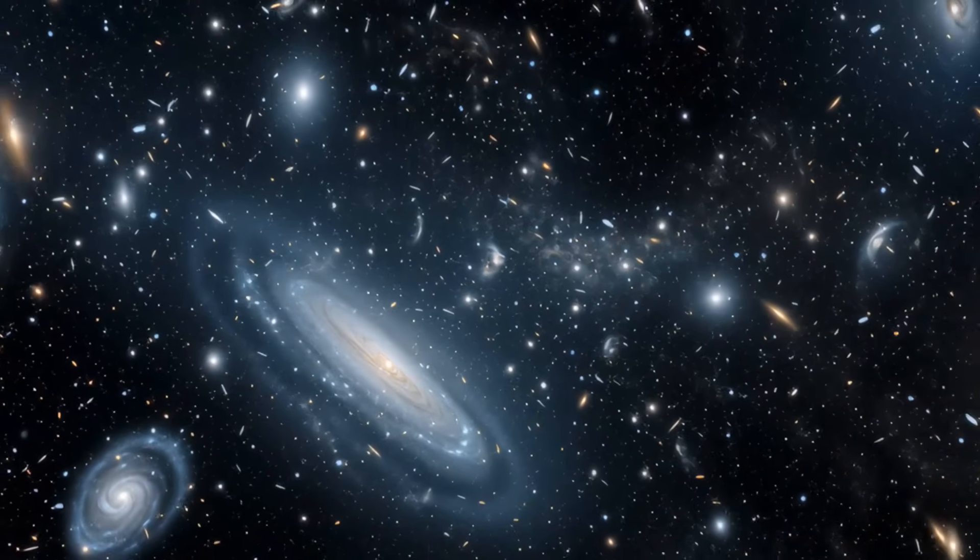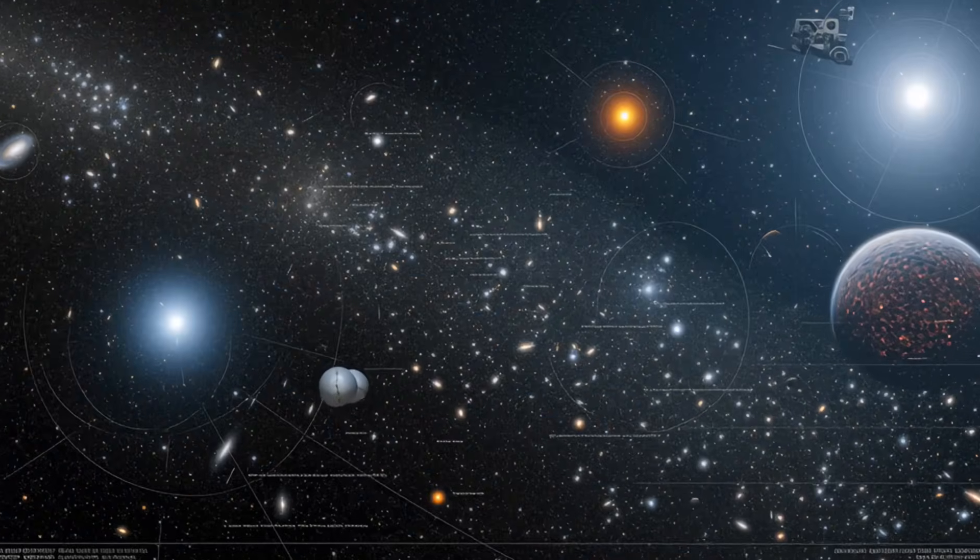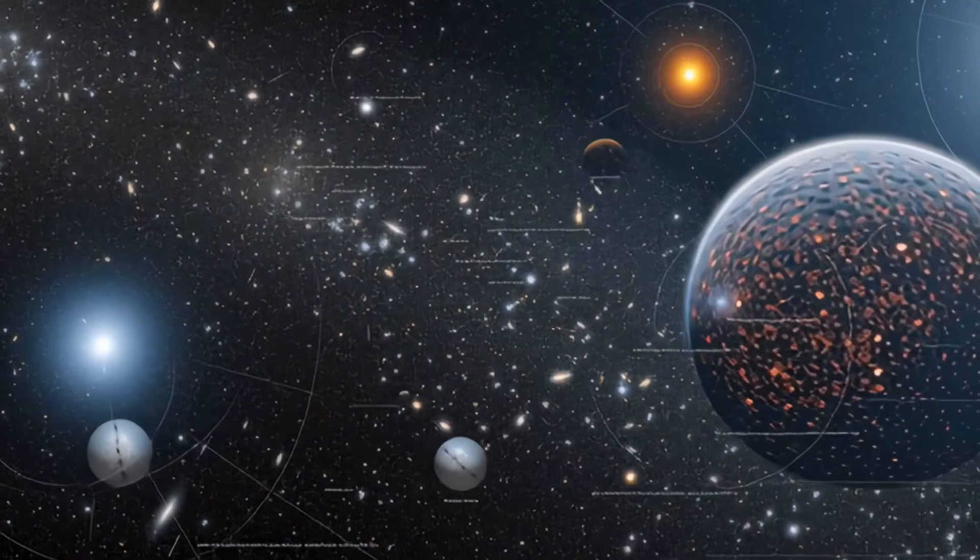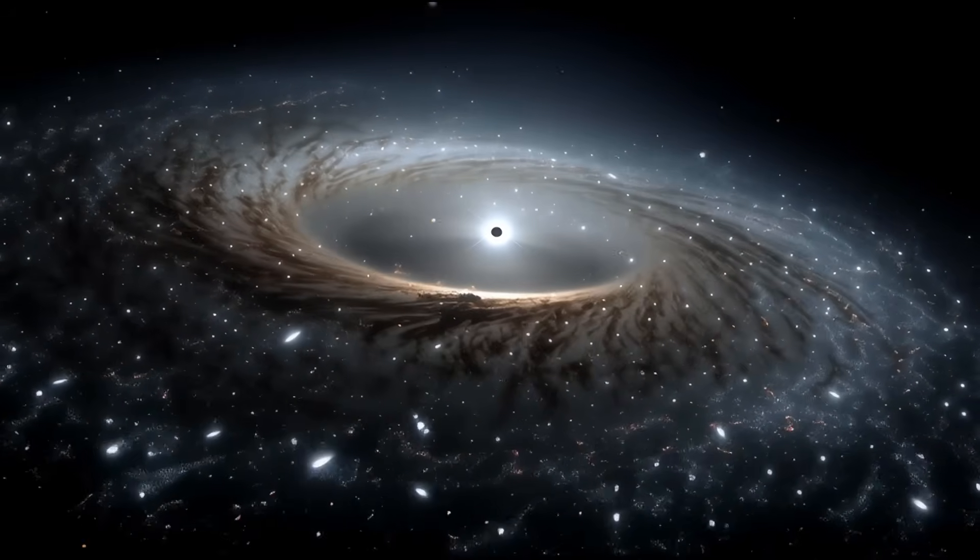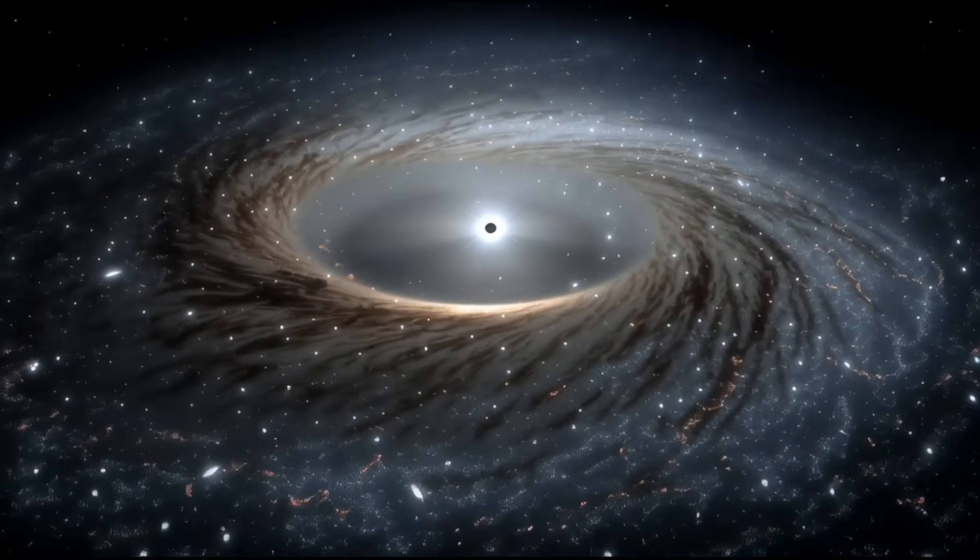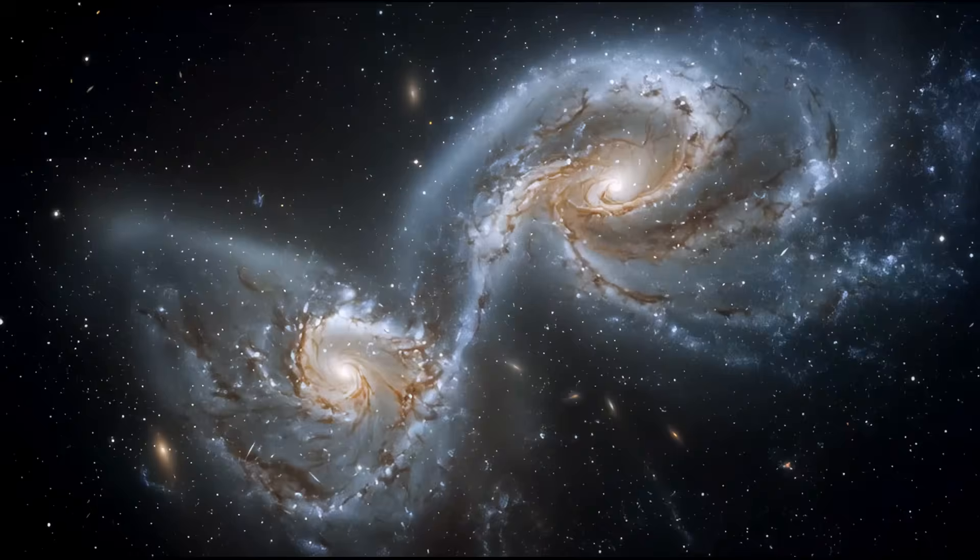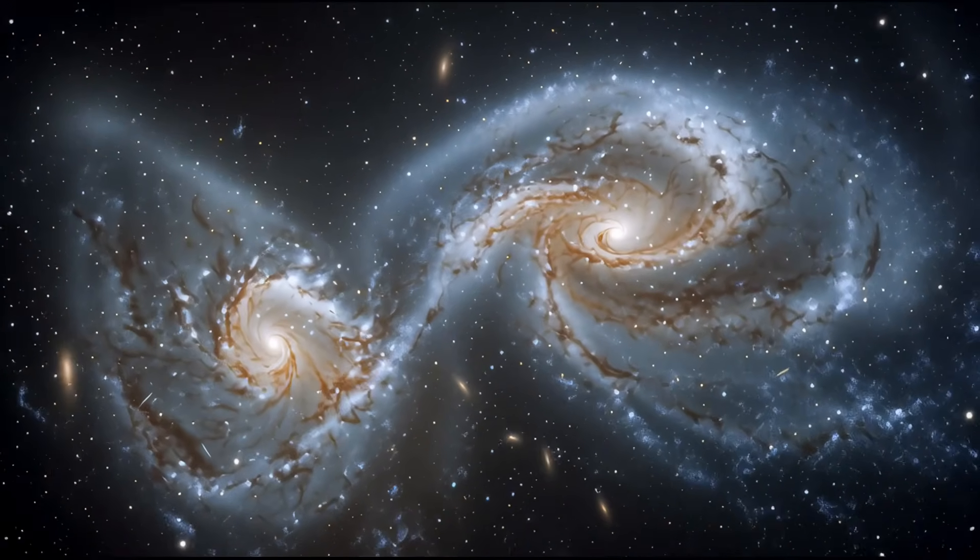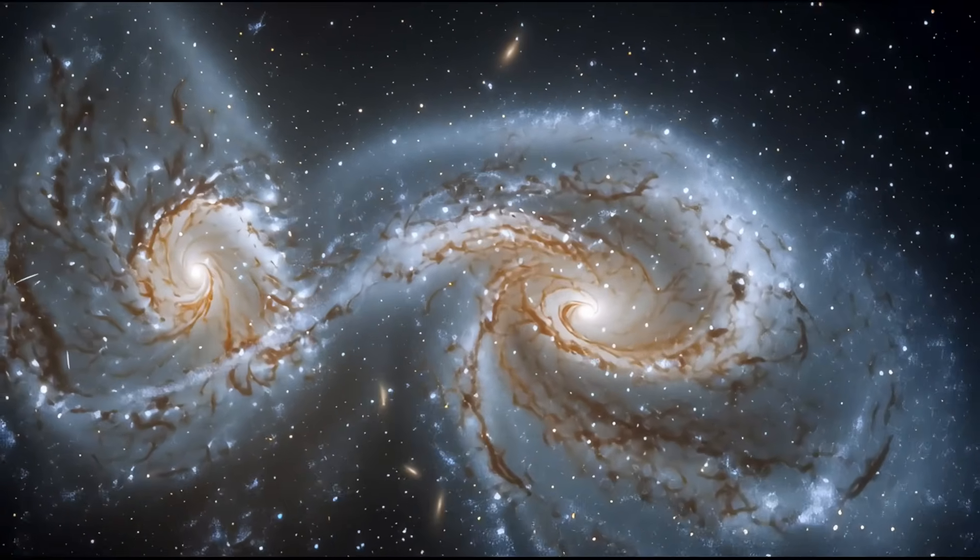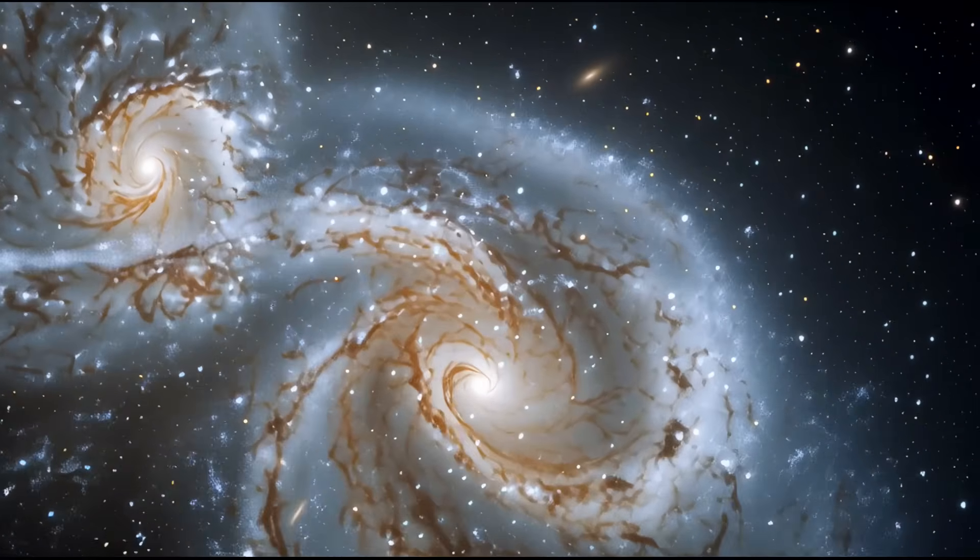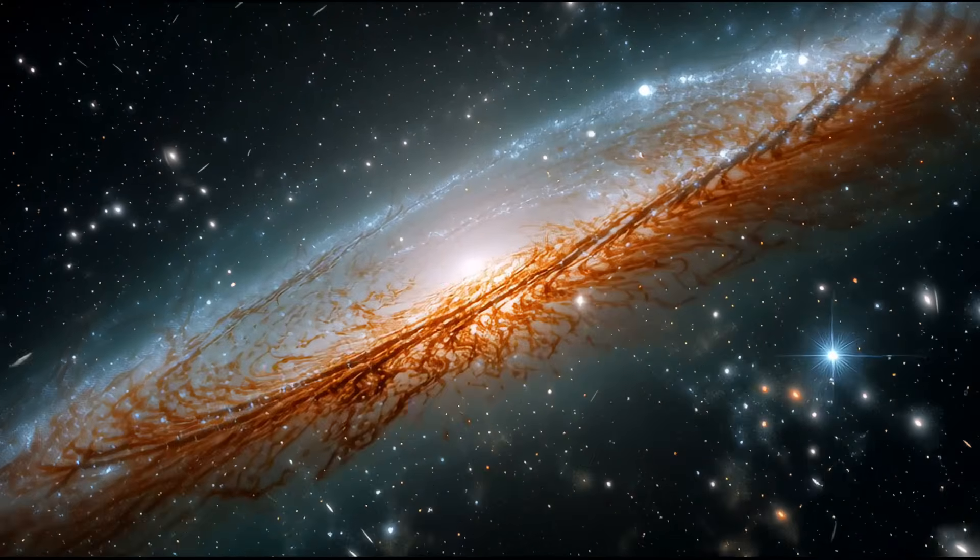So where does this leave us? Floating on a tiny rocky planet, orbiting an average-sized star in a pretty typical spiral galaxy, which is part of a relatively small supercluster in a universe containing structures so vast that they violate our theoretical models. When Neil deGrasse Tyson talks about having a cosmic perspective, this is exactly what he means.